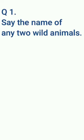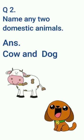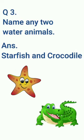Well done. Now the last section is name to each. Question number one: say the name of any two wild animals. Answer: lion and leopard. Question number two: name any two domestic animals. Answer: cow and dog. Question number three: name any two water animals. Answer: starfish and crocodile. Well done! Now we have finished all the general questions. Learn and practice. Thank you.